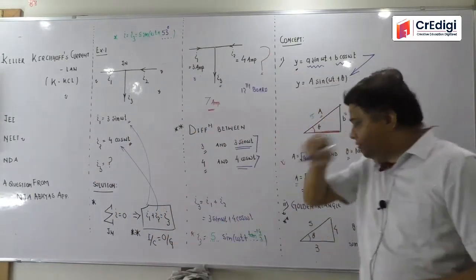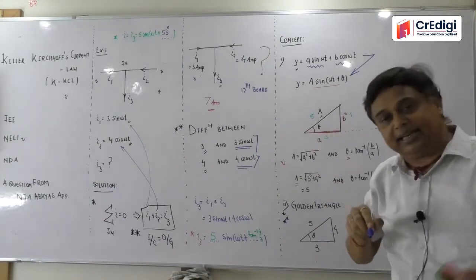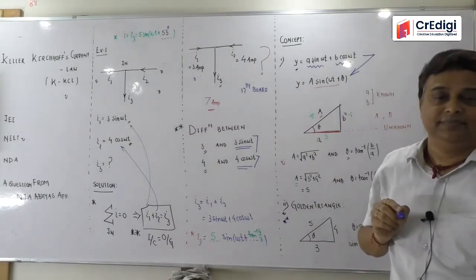If theta answer comes as 53 degree, then it will come. I can say this question will come. But what is it? Is it possible?